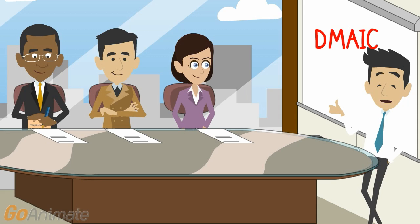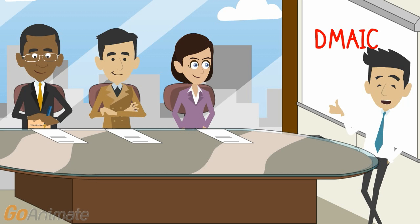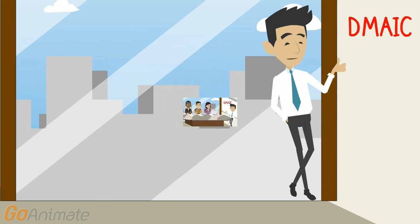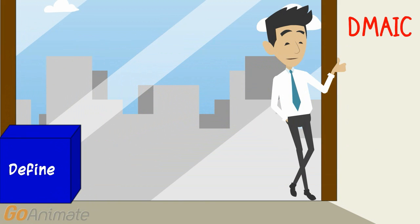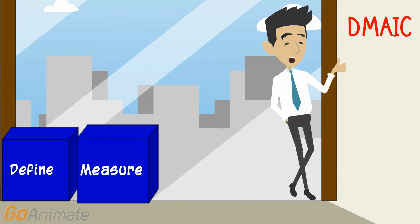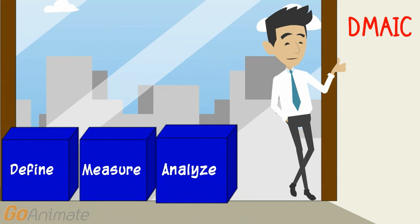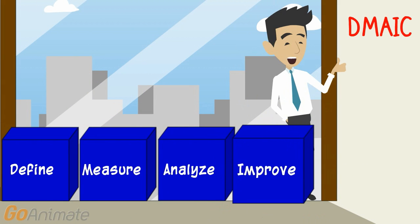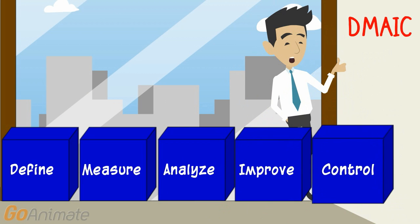Hello ladies and gentlemen. Today we are going to talk about a five-step improvement process known as DMAIC. DMAIC stands for Define, Measure, Analyze, Improve, and Control.